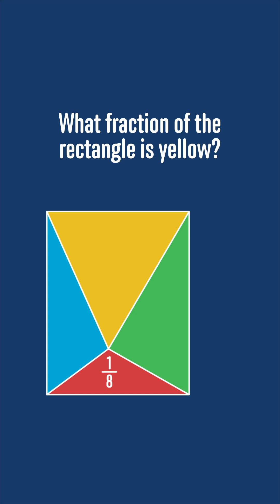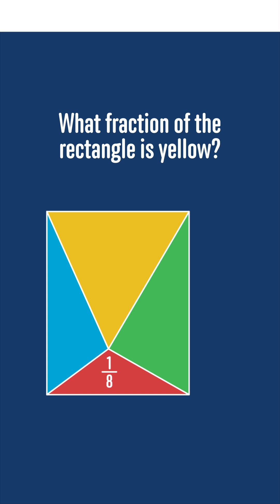A rectangle is split into four triangles, as shown. The area of the red triangle is one-eighth of the area of the whole rectangle. What fraction of the area of the rectangle is the yellow triangle?